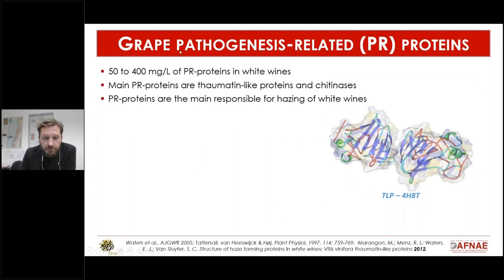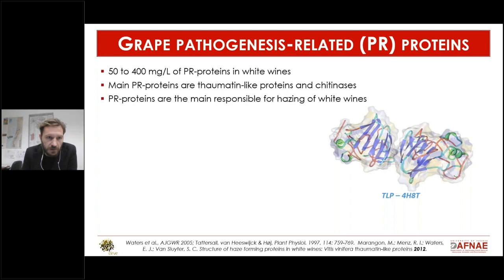These proteins are called grape pathogenesis-related proteins — proteins that plants, not only grapevines but plants in general, produce to defend themselves from pathogens. In wine, typically depending on the source and the wine, you find 50 to 100 milligrams per liter of proteins, but there are reports of up to 400–500 milligrams per liter. This is a relatively high amount — enough to cause significant haze formation in wines.